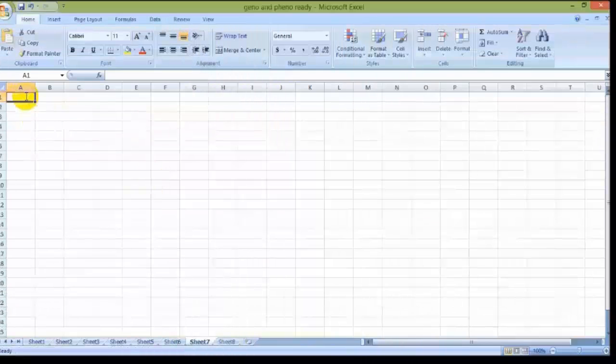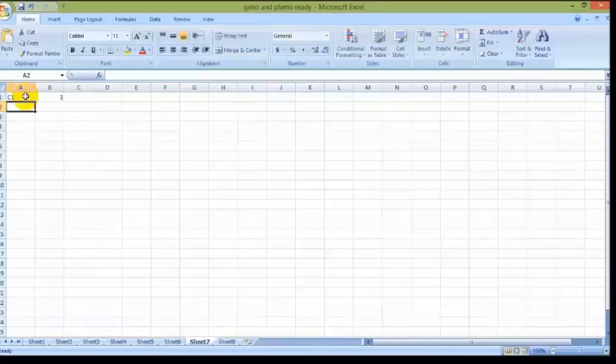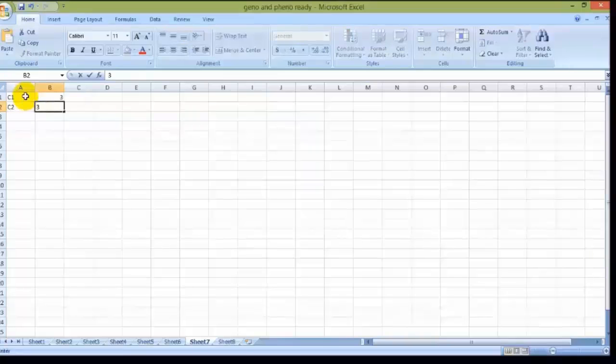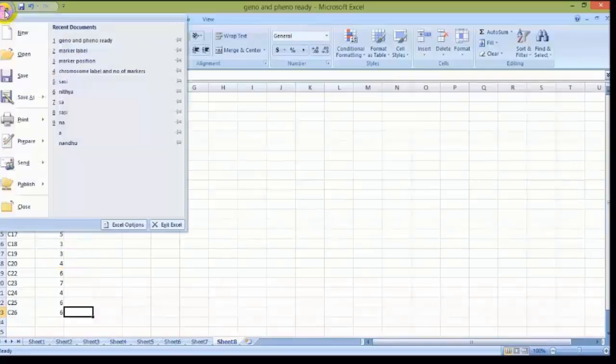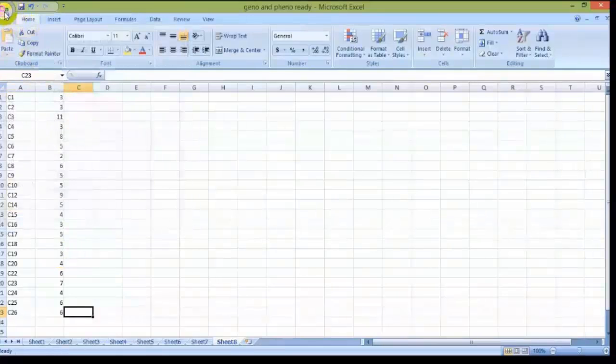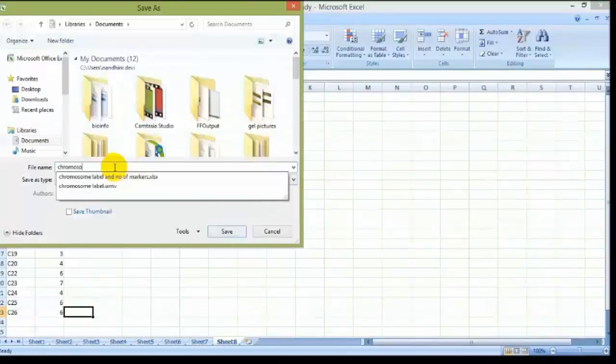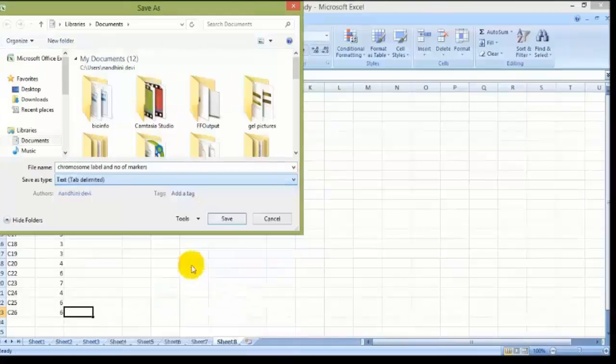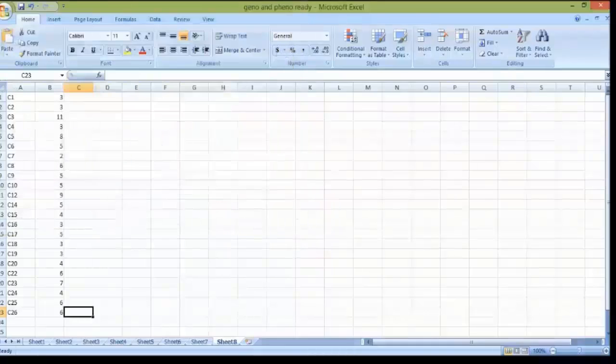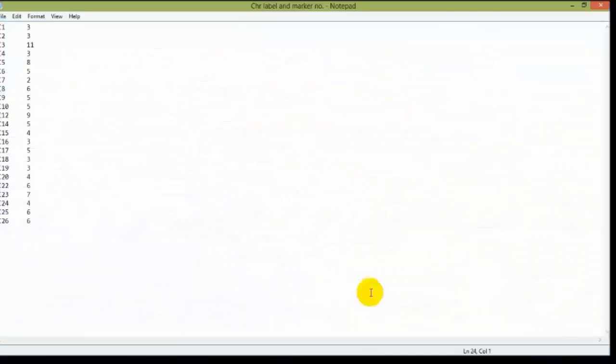Open an Excel sheet. In the first column, the chromosome names were labeled from C1 to C26. Here we are using 26 chromosomes. The number of markers present in each chromosome was entered in the second column with respect to the chromosome number. We are saving this Excel file in the name of chromosome label and number of markers with the extension of .txt file format. This is the notepad view of the chromosome label and number of markers data file.